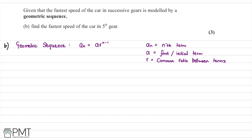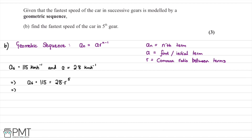In our case, A6 equals 115 kilometers per hour and A equals 28 kilometers per hour. Using the geometric sequence formula, 115 equals 28 multiplied by R to the power of 5. Therefore R to the power of 5 is 115 divided by 28. We then take the fifth root, so R equals (115 divided by 28) to the power of 1 over 5. Putting this into the calculator gives 1.3265 and so on.